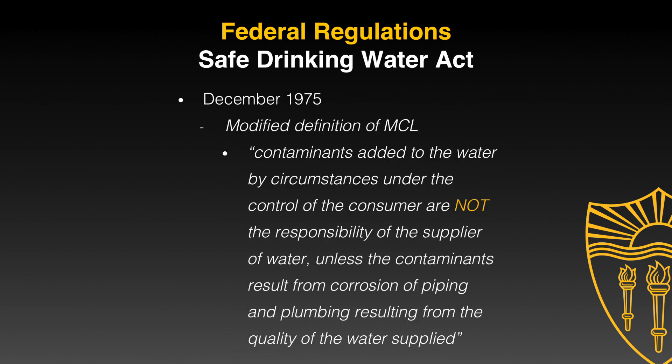There was a change about a year after the original Safe Drinking Water Act. They modified the definition of maximum contaminant level, saying contaminants added to the water by circumstances under the control of the consumer are not the responsibility of the supplier. So if there were cross-connections within a residence, a commercial or industrial water user, the water supplier was not responsible for the abatement or correction of internal cross-connections. However, it did go on to say, unless the contaminants resulted from corrosion of piping and plumbing caused by the quality of the water being supplied.